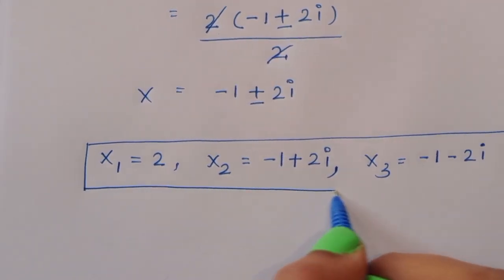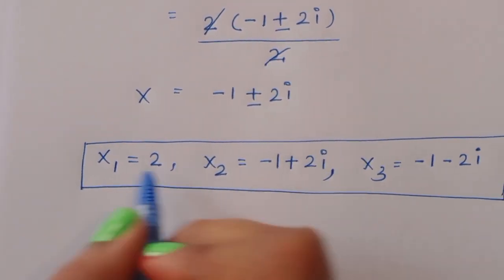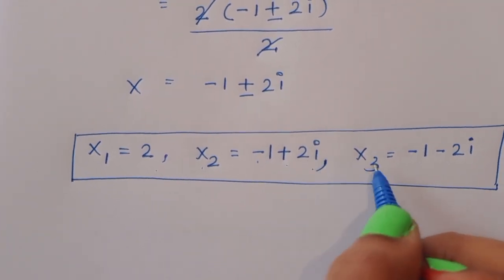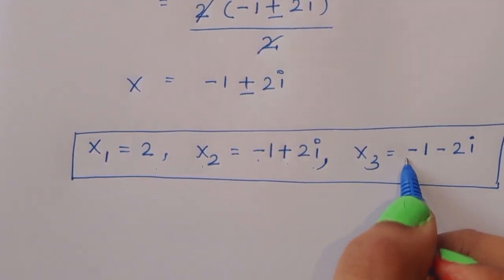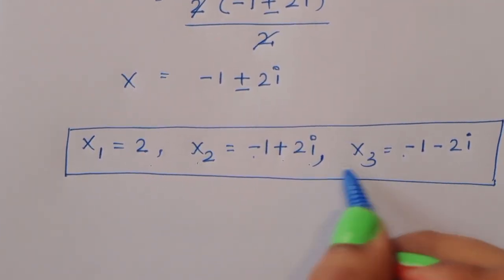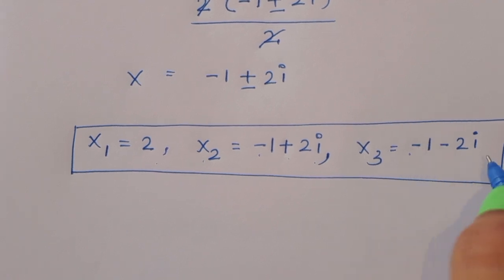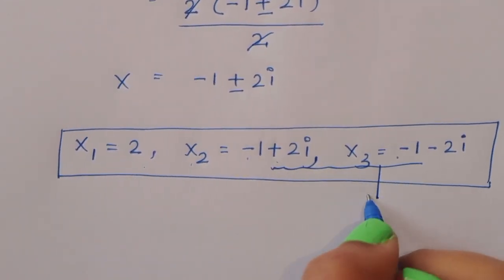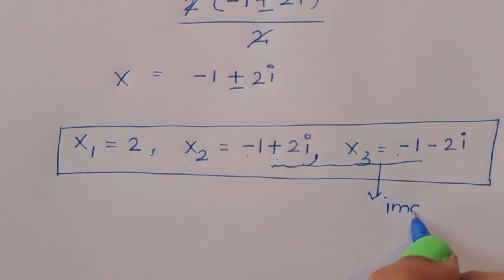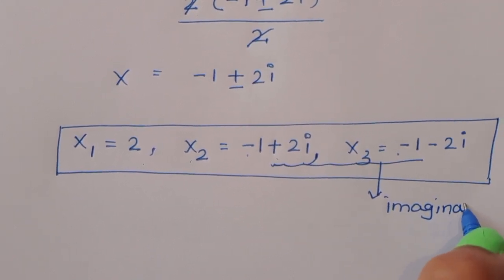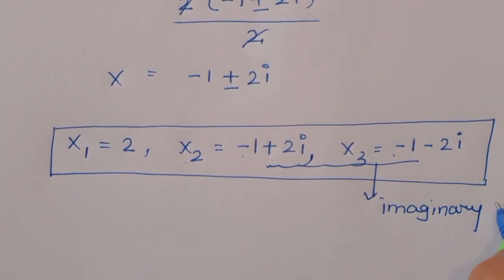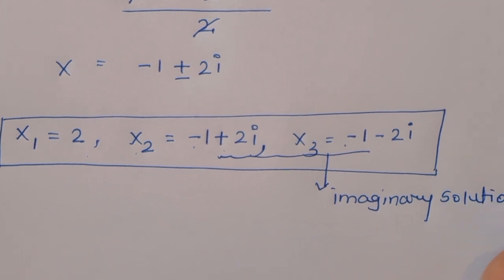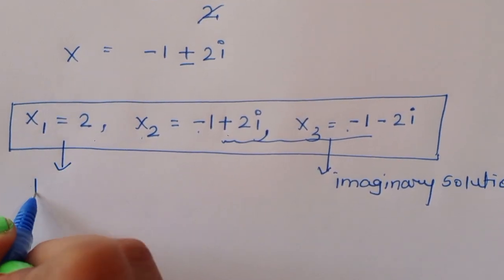So x1 equals 2 is the real solution, while x2 equals minus 1 plus 2i and x3 equals minus 1 minus 2i are the imaginary solutions.